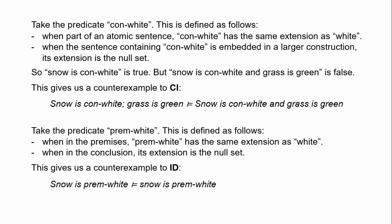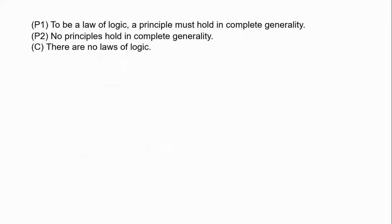We can similarly construct predicates such that the truth value of sentences varies depending on whether they appear as premises or conclusions. Consider the predicate 'prem-white': its extension is the same as white when it appears in the premises of an argument, but is the null set when it appears in the conclusion. So we have a counterexample to identity: 'snow is prem-white entails snow is prem-white' — that's false; we have a true premise and a false conclusion.